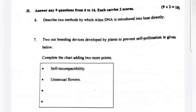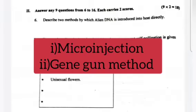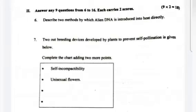Question 6. Describe two methods by which alien DNA is introduced into the host directly. Answer: 1. Microinjection. 2. Gene gun method.